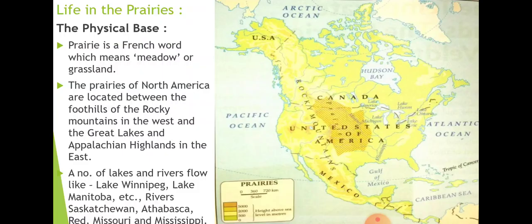Now, prairie — as you can see in the map provided, the dark yellow colored part shown is the prairie. This is the area referred to as a grassland, and the name given is 'prairie' because prairie is a French word which means meadow or grassland. The natural vegetation of this area is grass, which is why it is known as grassland.